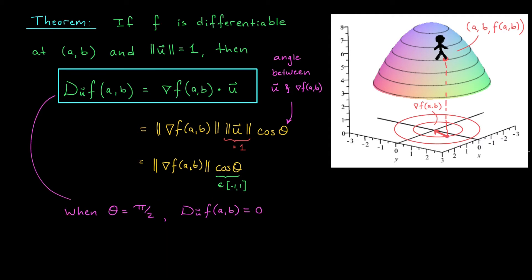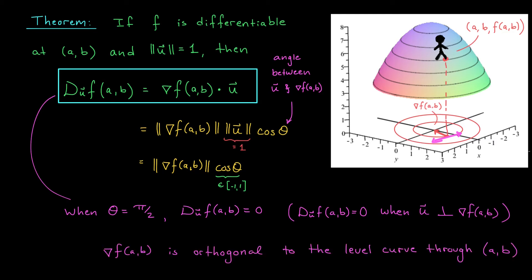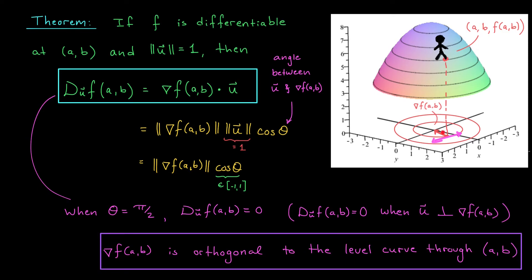The last interesting case occurs when θ equals π/2. When this happens, cos θ will be zero, and hence so too will be our directional derivative. That is, the rate of change of our function will be zero if we move in a direction that's perpendicular to the gradient vector. If our hiker's elevation isn't changing as he starts moving in this direction, then essentially he's walking along a level curve — the direction vector u is pointing us along a level curve. Since the gradient vector is perpendicular to u in this case, we conclude that the gradient vector at (a,b) is orthogonal to the level curve through (a,b). This is an important property of the gradient referred to in Mobius as the orthogonality theorem.